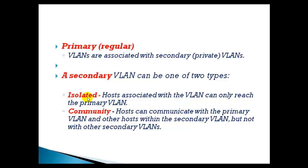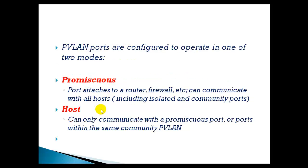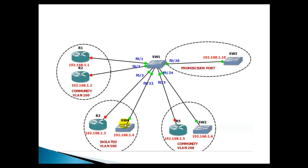Isolated ports will not communicate with any other isolated port. Community ports will communicate only within the same community. Every port can be configured as a promiscuous port, which can communicate with all hosts including isolated ones, whereas host ports can only communicate with promiscuous ports or within the same community private VLAN.